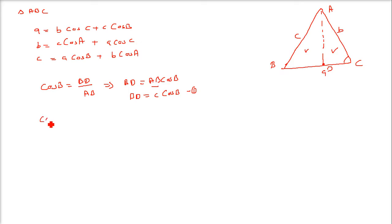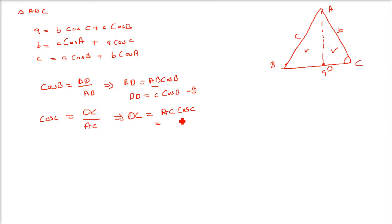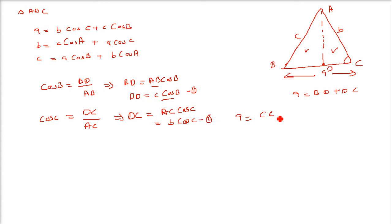Then in the second triangle, cosC equals DC divided by hypotenuse AC. So DC equals AC cosC. AC is nothing but b, so DC equals b cosC. Now A from here to here — A can be written as BD plus DC. BD is C cosB and DC is b cosC, so A equals C cosB plus b cosC.